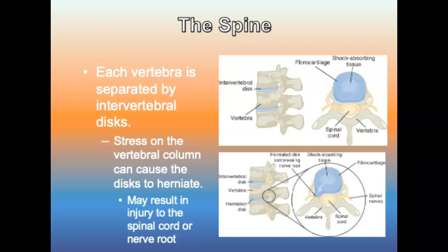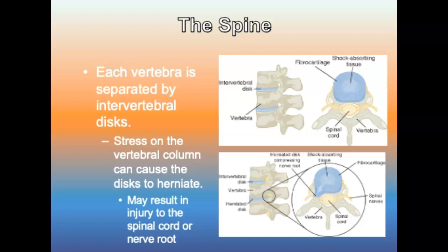The vertebral column can sustain normal flexion and extension of 60 to 70% without stressing the spinal cord. The spinal cord transmits nerve impulses to the brain and body. It leaves the skull through the foramen magnum. There are 31 pairs of spinal nerves emerging from different segments. C1 through C7 exit above their respective vertebrae, C8 exits below C7, and all other spinal nerves exit below the vertebrae for which they are named.